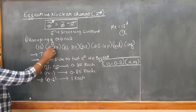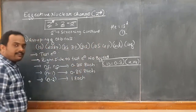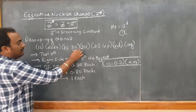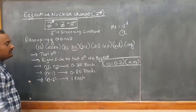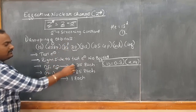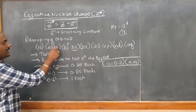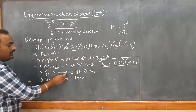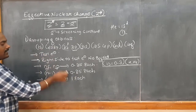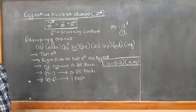For example, if the test electron is in 3p, the 3s and 3p electrons are in the same N group at 0.35 each. The 2s and 2p become N-1 at 0.85 each. Then the 1s orbital becomes N-2 and contributes 1 each. That is how the calculation proceeds.